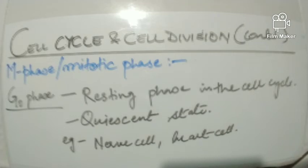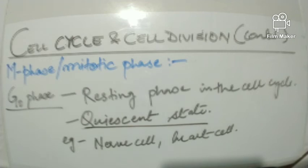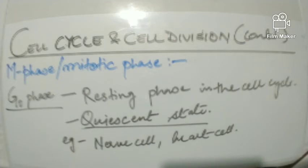Now let us talk about the G0 phase, also known as the resting phase. This resting phase is a period in the cell cycle in which the cell exists in a quiescent state — the cell is neither dividing nor preparing to divide. Some types of cells, such as nerve cells and heart cells, become quiescent when they reach maturity.